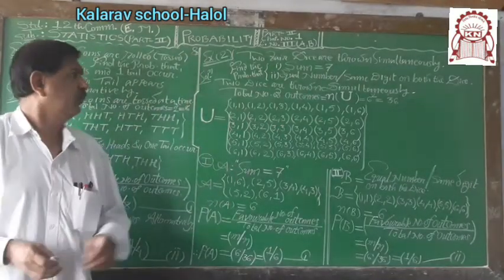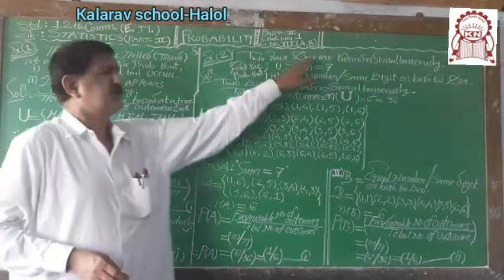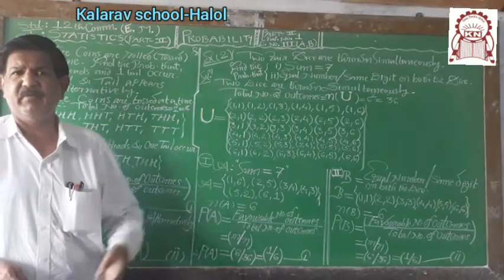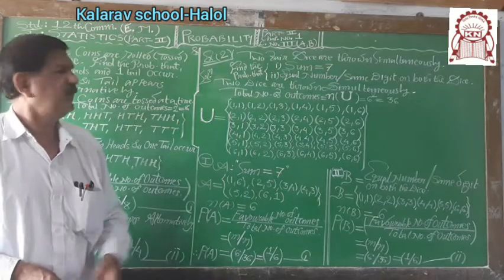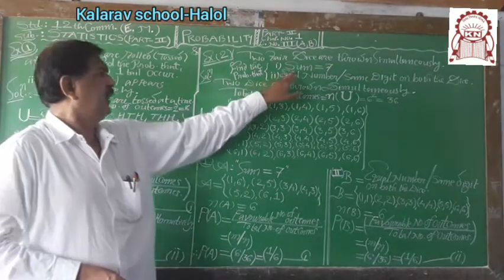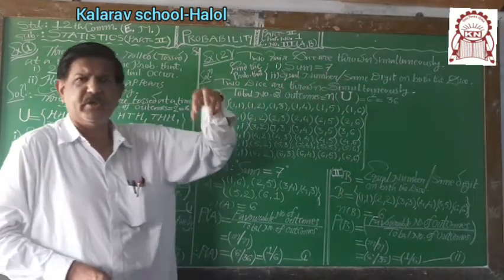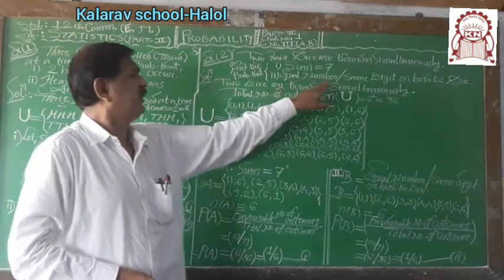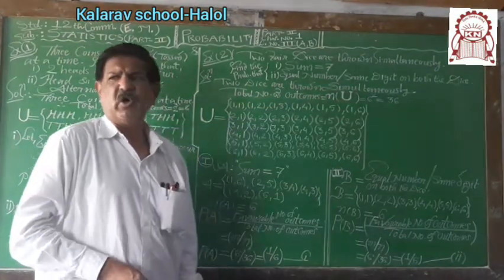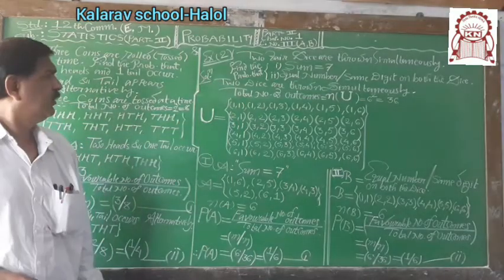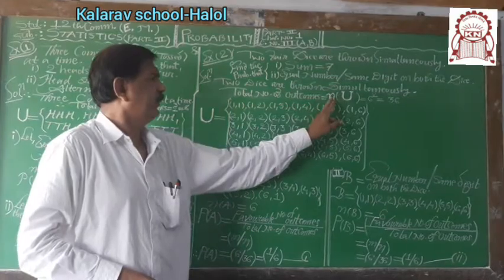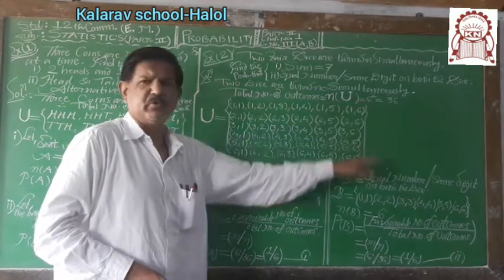Example number 2. 2 fair dice are thrown simultaneously. Find the probability that sum equal to 7, means total of the faces equal to 7, and equal numbers on both the dice. Now 2 dice are thrown, therefore total outcomes are 6 raised to 2 equal to 36.